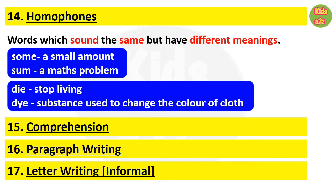The next topic is homophones — sets of words that sound the same but have different meanings. For example, 'some' means a small amount, while 'sum' means a maths problem. 'Die' means to stop living, while 'dye' means a substance used to change the color of cloth.